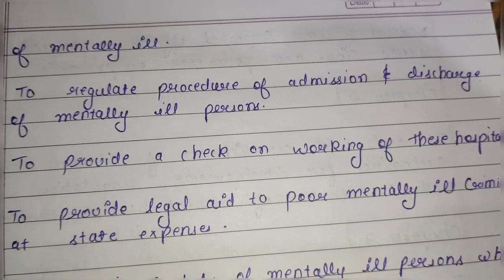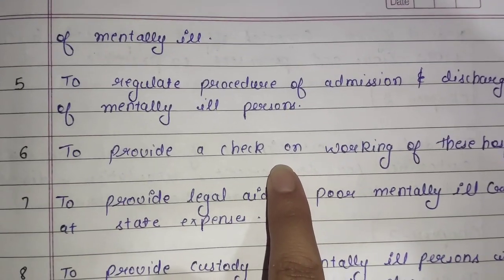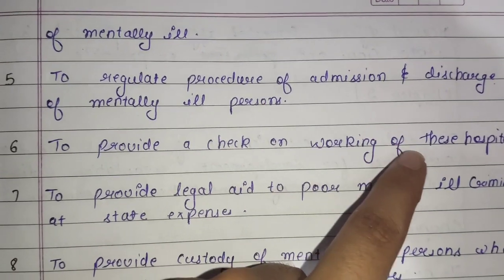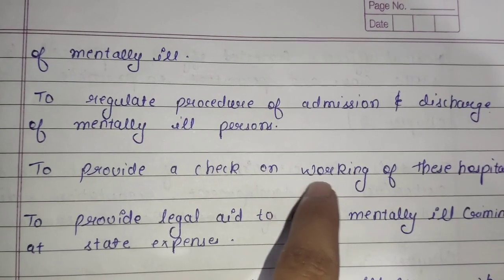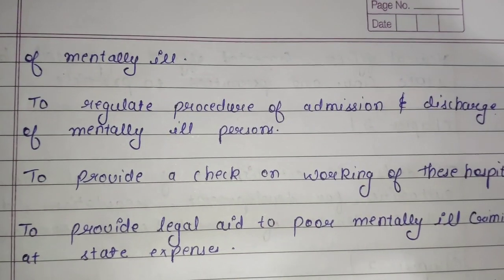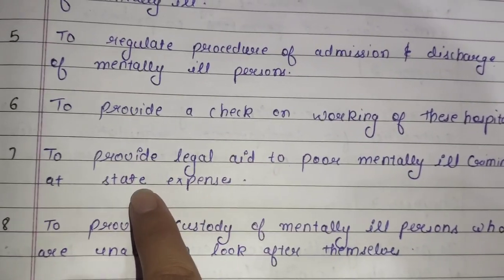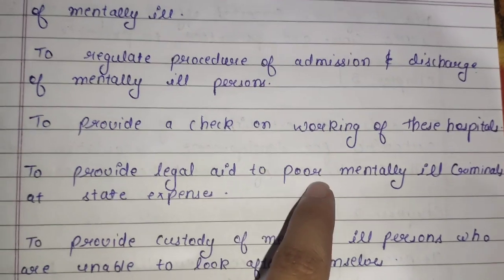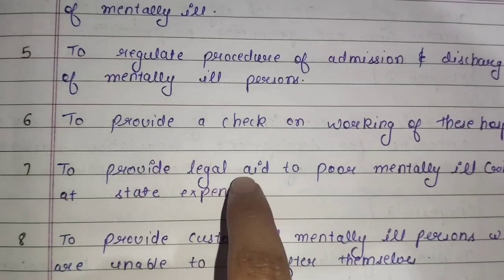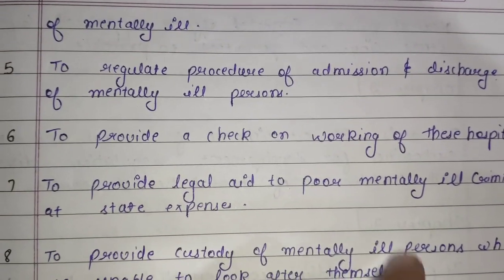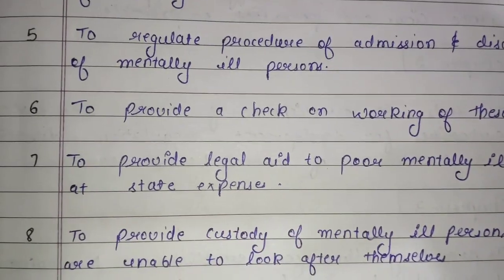The sixth objective is to provide a check on the working of the hospitals. The seventh objective is to provide legal aid to poor mentally ill criminals at state expense.